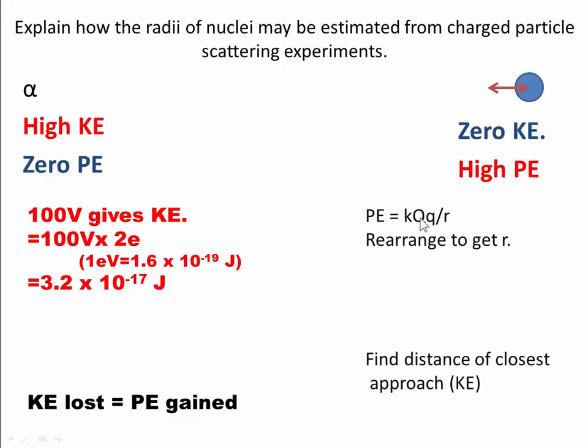We know that the potential energy is equal to KQQ over R. So we need to rearrange that to get R and then we find the distance of closest approach.